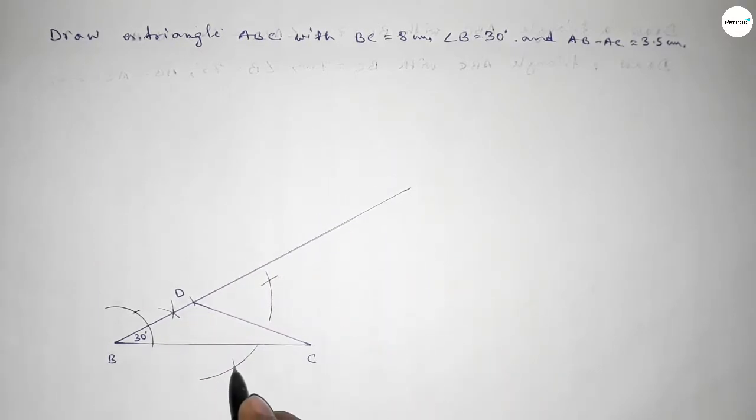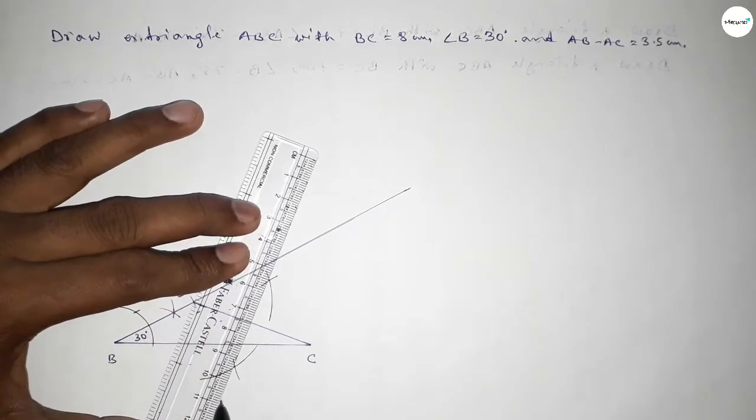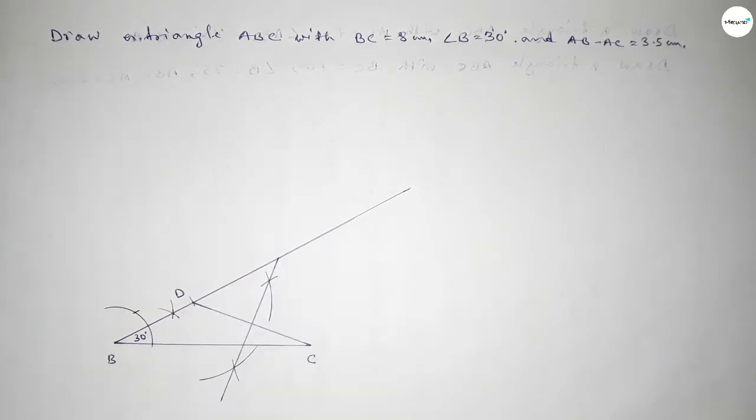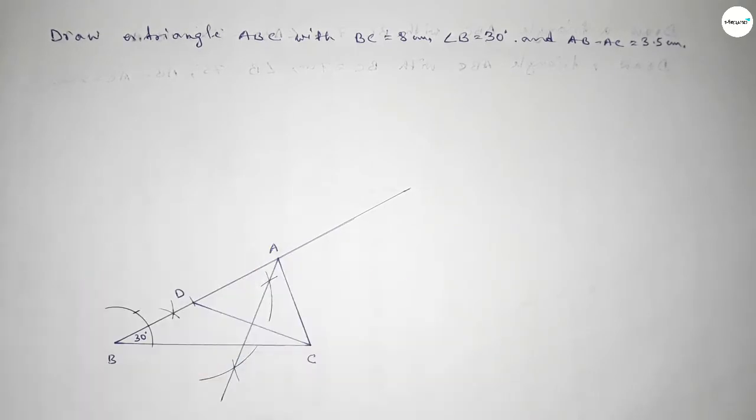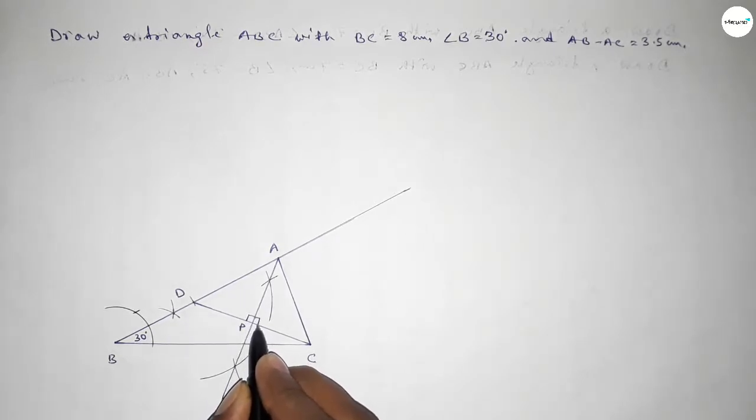Now both the curves intersect at two points. Now joining this bisector which made the line at a point A. Now joining A and C, so we got ABC triangle. And here taking P point and this is perpendicular.